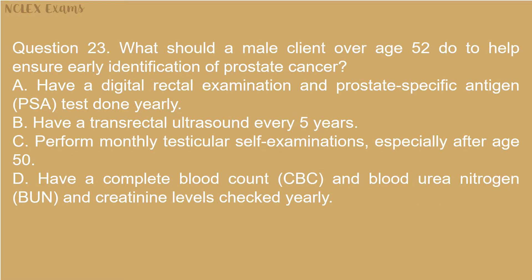Question 23: What should a male client over age 52 do to help ensure early identification of prostate cancer? A) Have a digital rectal examination and prostate-specific antigen (PSA) test done yearly. B) Have a transrectal ultrasound every 5 years. C) Perform monthly testicular self-examinations, especially after age 50. D) Have a complete blood count (CBC) and blood urea nitrogen and creatinine levels checked yearly.